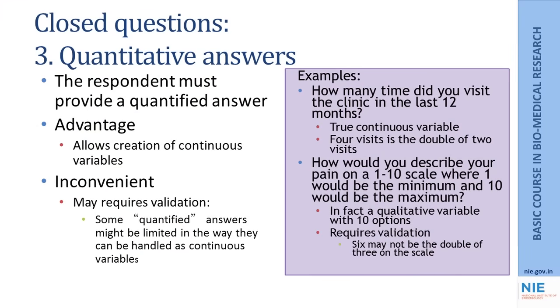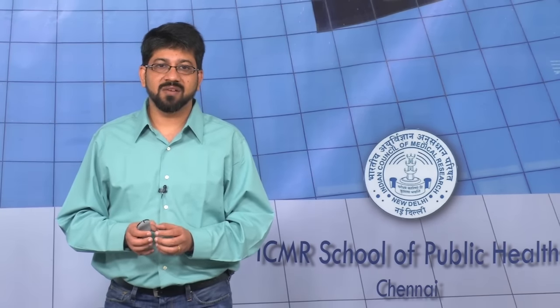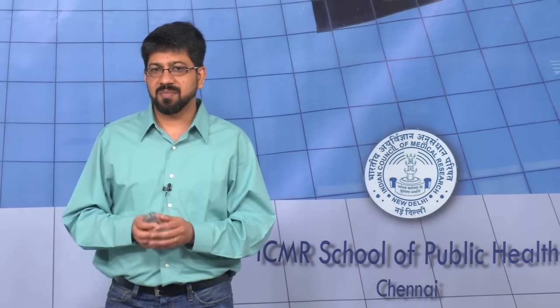We could also have closed questions with quantitative answers, where the respondent has to provide a number such as age, or for example how many times did you visit the clinic in the last 12 months. These kind of questions allow the creation of continuous variables and analysis of continuous variables. If needed, we can always categorize these variables later during analysis. However, sometimes quantitative answers can be inconvenient because some quantified answers may be limited in how they can be handled as continuous variables.